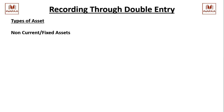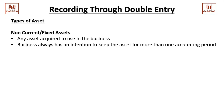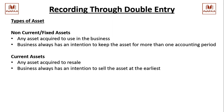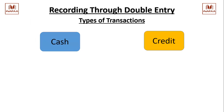We discussed the definitions in detail. There are two types of assets: non-current or fixed assets - any asset acquired to use in the business, where the business has an intention to keep the asset for more than one accounting period. And current assets: any asset acquired to resell. The business always has an intention to sell the asset; even if it is not sold in a year or two, it is still categorized as a current asset.